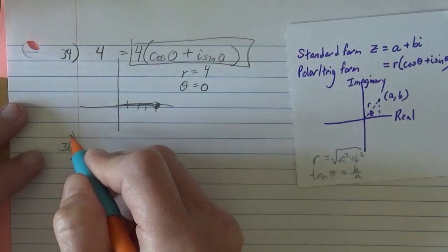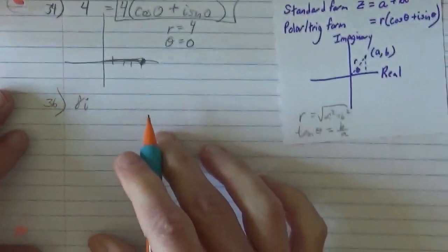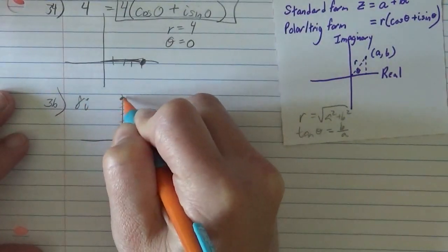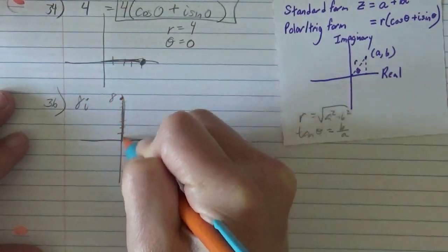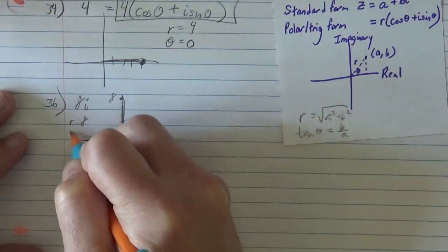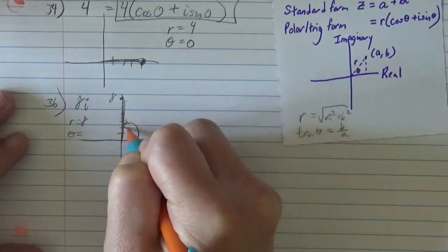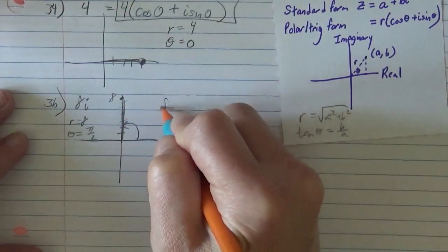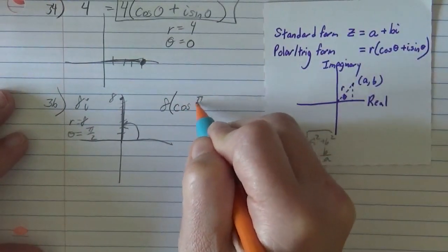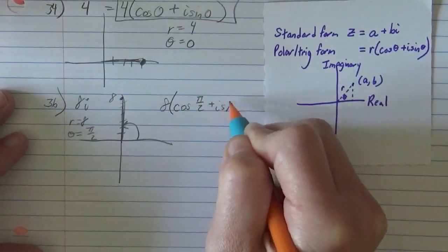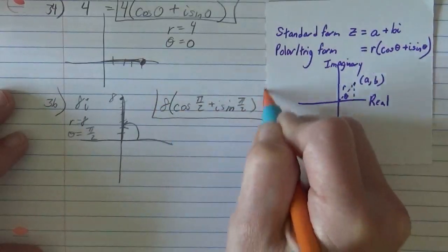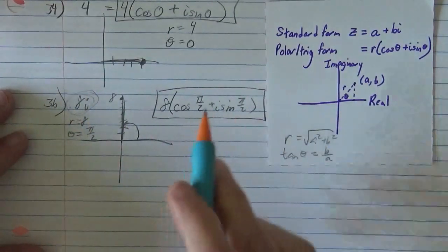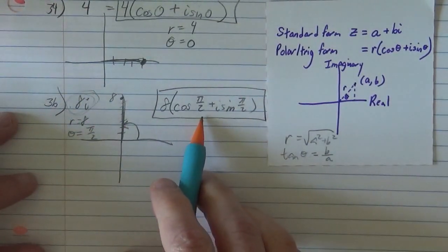I'll take that. If I do 36, I've got 8i. So I am 8 on the imaginary. And so I can tell that my radius must be 8, and my angle must be 90 degrees, or in radians that's pi halves. So 8i is the same thing as 8 cosine pi halves plus i sine pi halves. And again, why we would want to write this simple thing like this, hopefully you'll see later. It has its uses.